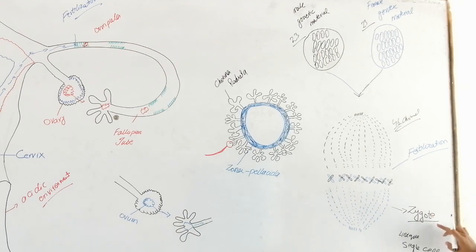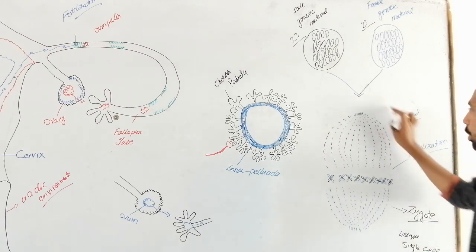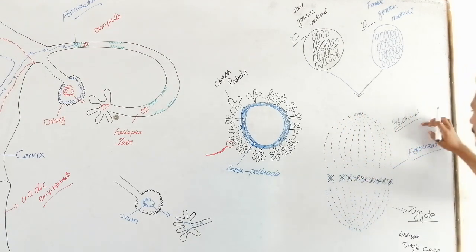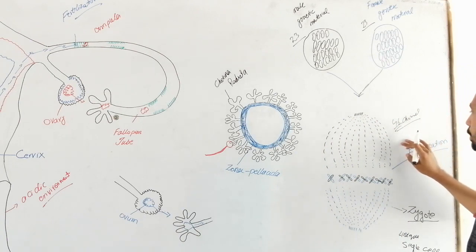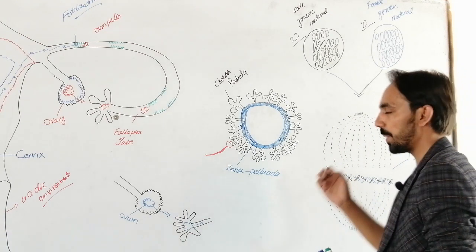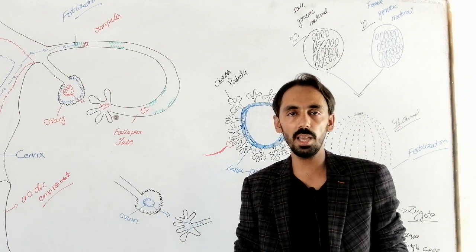And this is called the zygote — the unique single cell carrying 46 chromosomes. This 46-chromosome-carrying single cell has every specification and every characteristic of a human being.